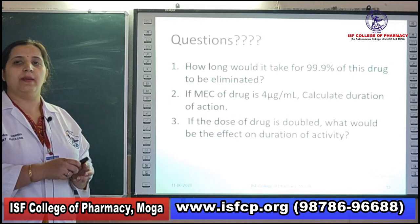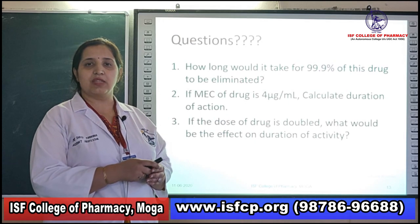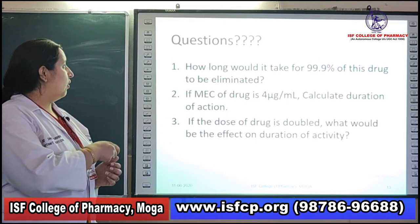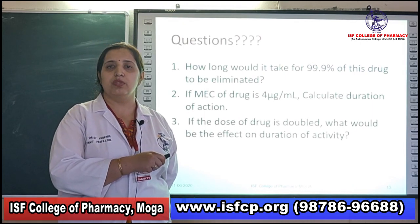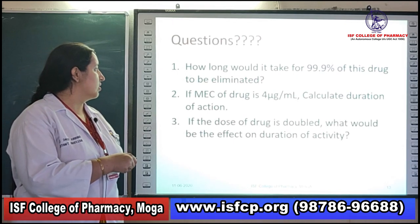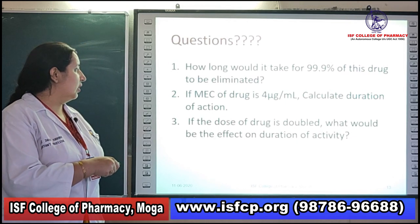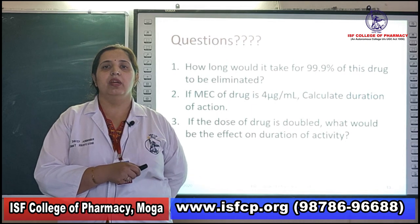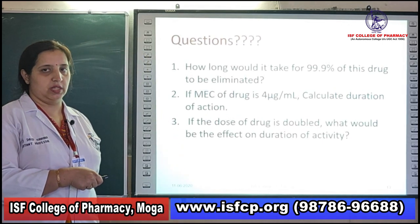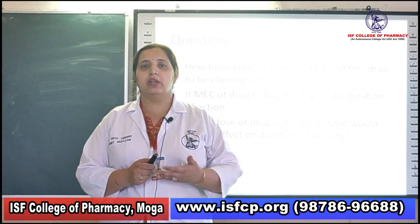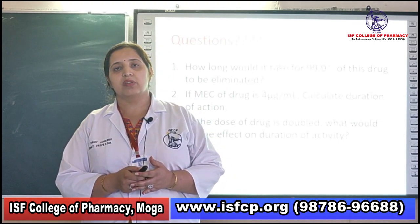After computing all these pharmacokinetic parameters, I hope students will be able to solve further questions. As a task: (1) How long would it take for 99.9% of this drug to be eliminated? (2) If the minimum effective concentration is 4 microgram/ml, calculate the duration of action. (3) If the dose is doubled to 1200 mg, what would be the effect on duration of activity? In further demonstrations we will discuss more pharmacokinetic parameters like absorption rate constant and urinary excretion rate constants.